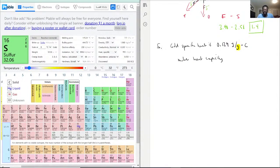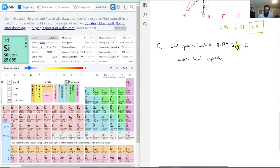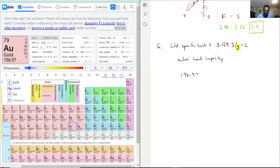Gold is all the way down here, and the value is 196.97 grams per mole. That is the molar mass of gold.